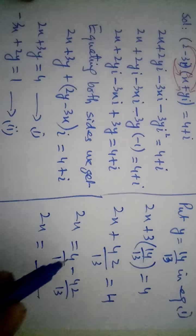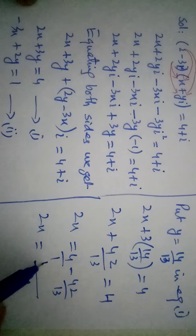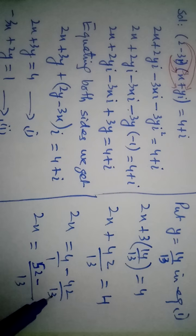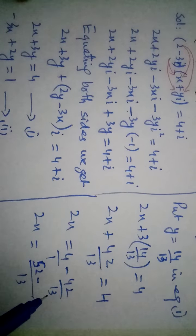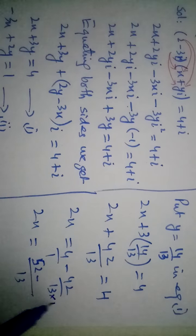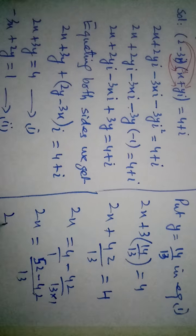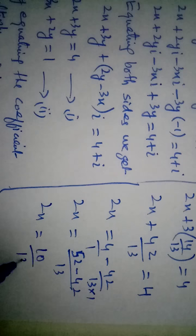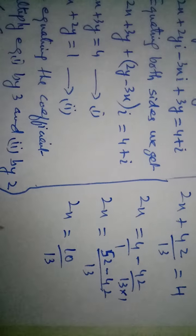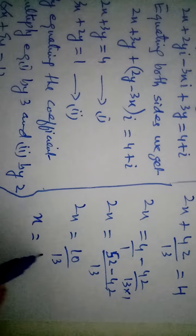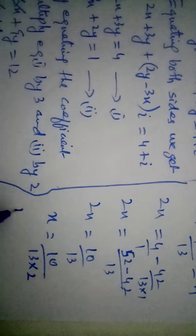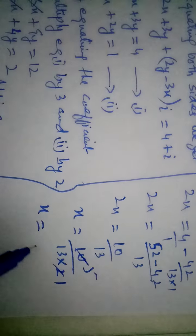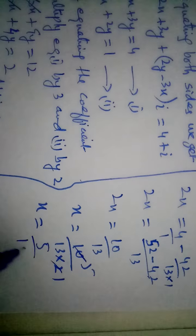13. Idhar 1 hai. 13, 4 time, 52. And 13, 1 times 13 and 42. So subtracting 42 from 52 we get 10 over 13. And 2x is equal to 10 over 13, so x is equal to 5 over 13.